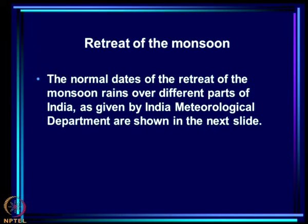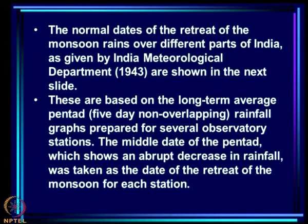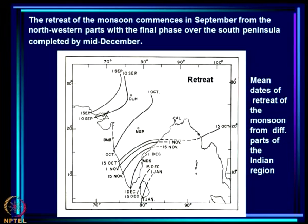Now I come to the retreat of the monsoon - also called the withdrawal of the monsoon; both words mean the same thing. The normal dates of retreat of the monsoon rains over different parts of the country are derived from long-term average pentad rainfall graphs for several observatory stations. The middle date of the pentad which shows an abrupt decrease in rainfall is taken as the date of retreat, just as the middle date of an abrupt increase is taken as the onset date.